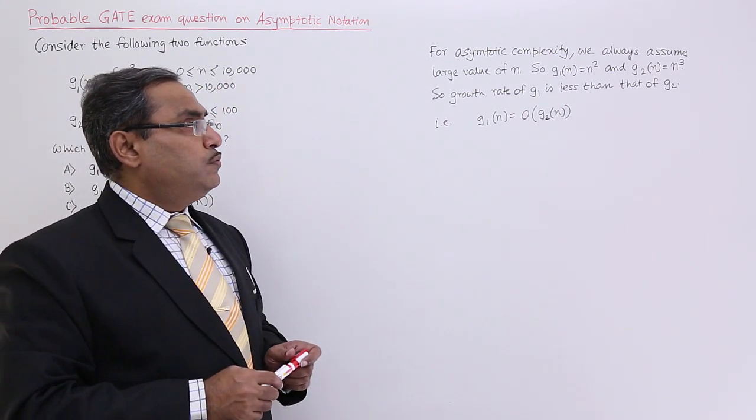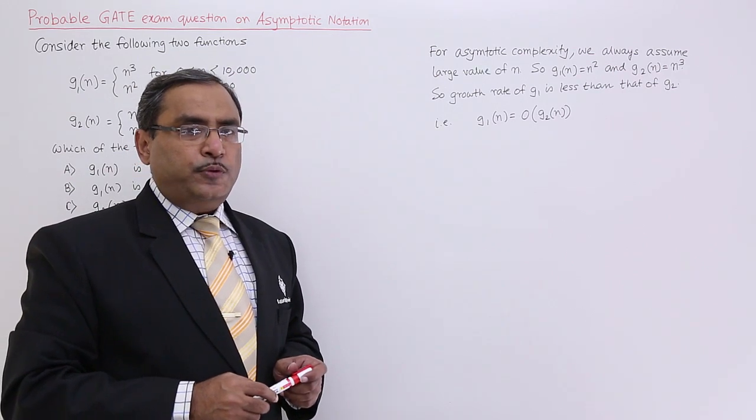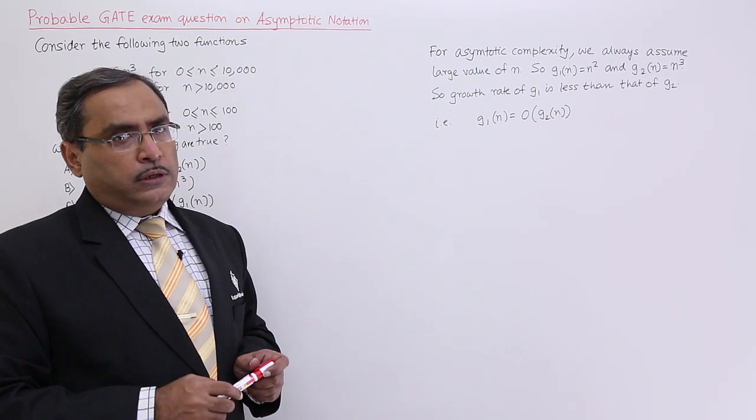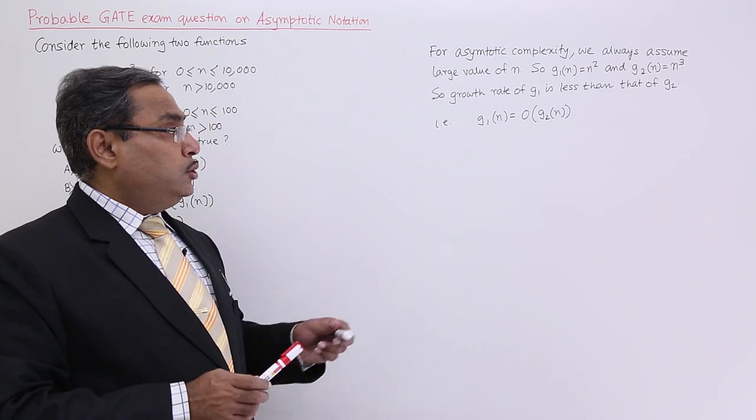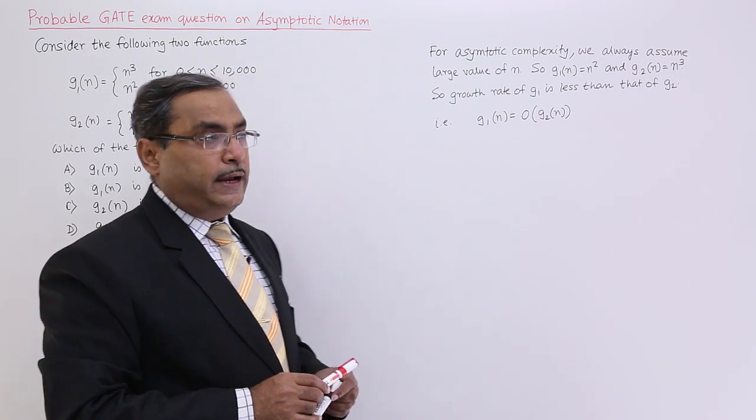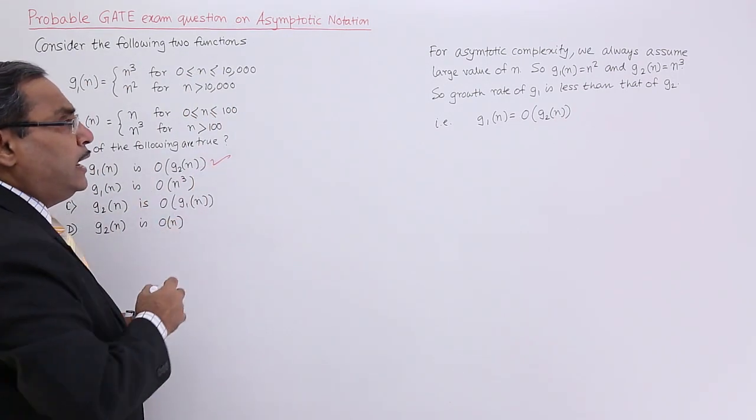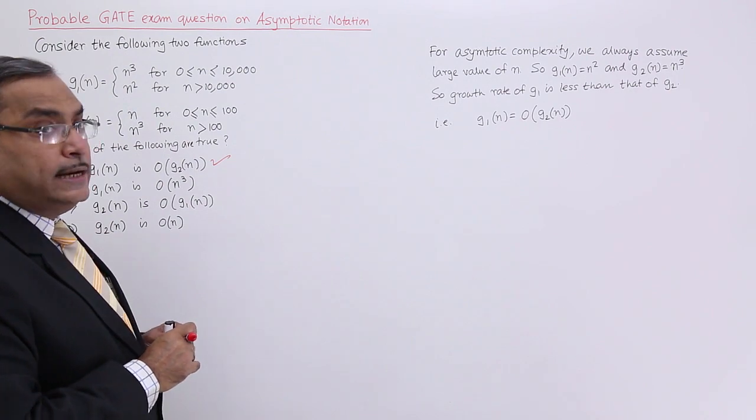The growth rate of g1 is lesser than that of g2, which means g2 is providing the upper bound for the growth rate of g1. So, we can easily write g1(n) is equal to big O notation of g2(n). I shall go for this option.